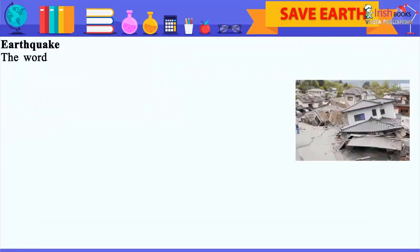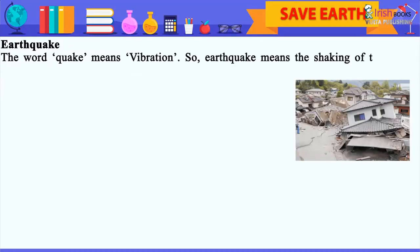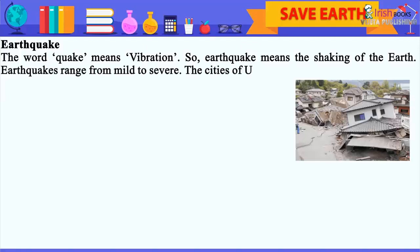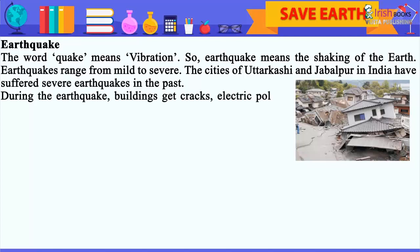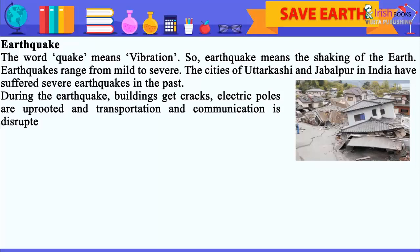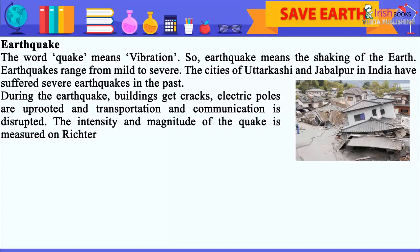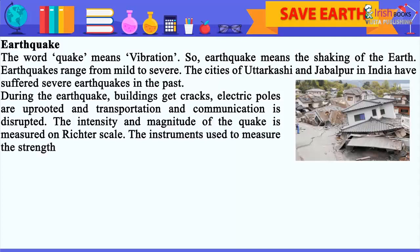Earthquake: The word 'quake' means vibration, so earthquake means the shaking of the earth. Earthquakes range from mild to severe. The cities of Uttarkashi and Jabalpur in India have suffered severe earthquakes in the past. During an earthquake, buildings get cracks, electric poles are uprooted, and transportation and communication are disrupted. The intensity and magnitude of the quake is measured on the Richter scale.